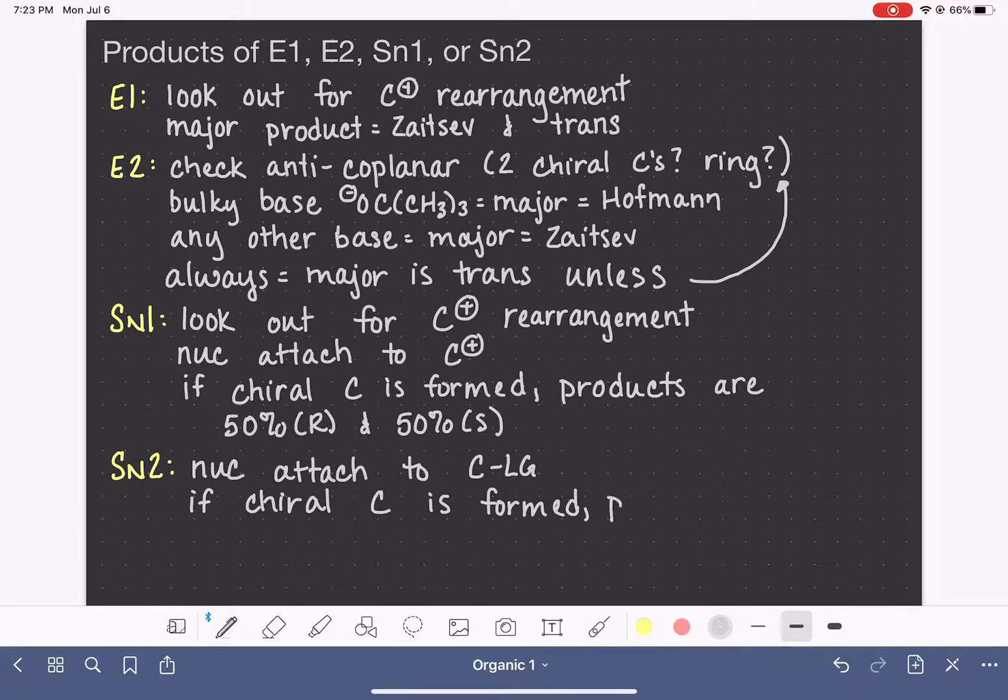the product has inverted stereochemistry from whatever type of stereochemistry the reactant had. So if the reactant was an S, then the product will be an R or vice versa.